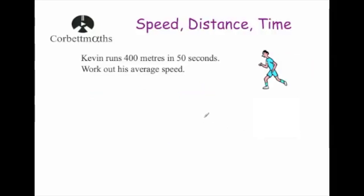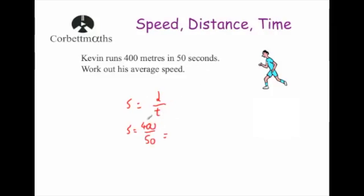It's not always miles per hour — it might be meters per second. Kevin runs 400 meters in 50 seconds. Work out his average speed. Speed equals distance divided by time: 400 divided by 50 equals 8. This time it's meters per second, written as m/s.